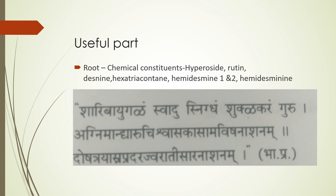Shariba yugalam means Krishna and Shweta together. Both are svadu, snigdha, and shuklagara, and guru. It is vrushya and guru. It is beneficial in agnimandya, aruchi, shvasa, kasa, and amavishanashana. It is tridoshashamana — doshatraya shamana. It is asrapradhara — beneficial in raktapradhara, meaning excessive uterine bleeding.